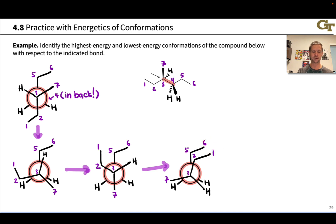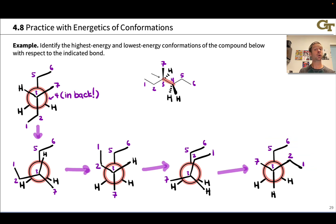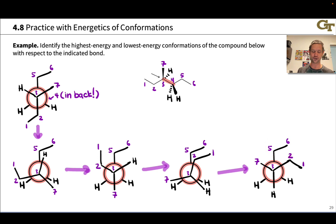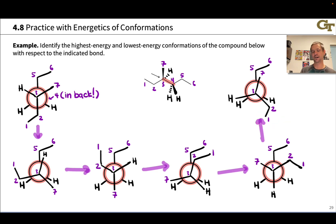In this eclipsed conformation, carbon one sits directly on top of carbon six and carbon two directly on top of carbon five, with the ethyl group orientations kept consistent for easy interpretation. Continuing the rotation brings us back to a staggered conformation where the two ethyl groups are now in a gauche relationship — the ethyl group has two gauche interactions, one with the methyl and one with the other ethyl group on the front carbon. Finally, one more rotation generates a last eclipsed conformation where the methyl group is eclipsing one ethyl group, giving both a methyl-ethyl and an ethyl-H eclipsing interaction.